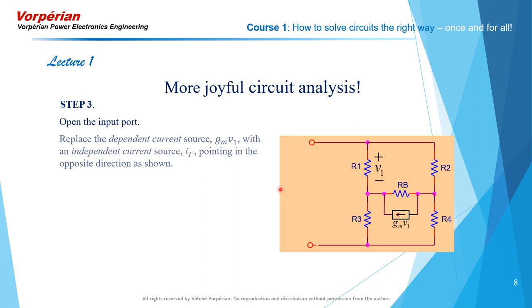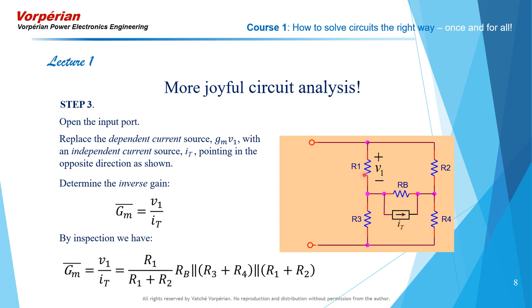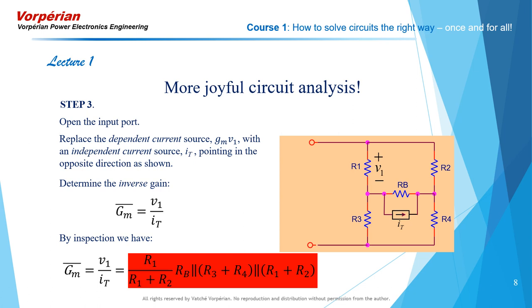Step three: open the input port and repeat the same process. Replace the dependent generator with an independent current source pointing in the opposite direction and once again determine the inverse gain V1 over IT — but this time with the input port open. This too can be determined by inspection quite easily. You have a current source IT pumping current into the parallel combination of RB, R1 plus R2, and R3 plus R4. That voltage generated is then divided down between R1 and R2 according to this voltage divider. And once again you're done with step three.